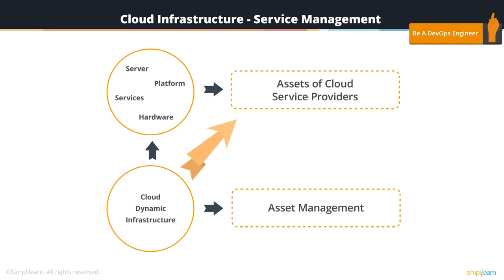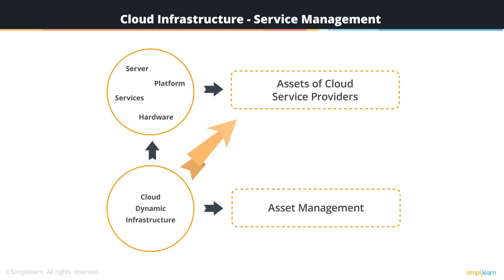With a cloud-based asset management system, thousands of data points can be collected and analyzed from virtually anywhere at any time in the field. Tracking assets is all about knowing where all of your stuff is at all times. Vital assets can easily go missing, fail to receive proper maintenance, or be omitted from reports if not tracked in real time. You can also attach documents — such as a PO, invoice, or warranty — to ensure no paper document goes missing for that piece of inventory.